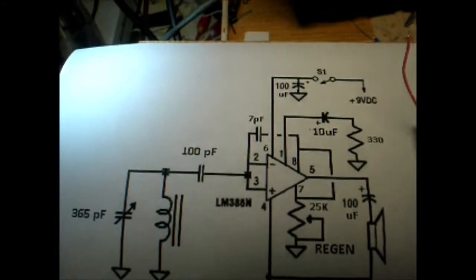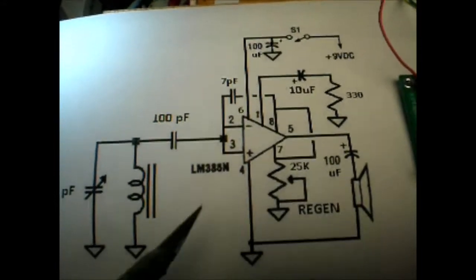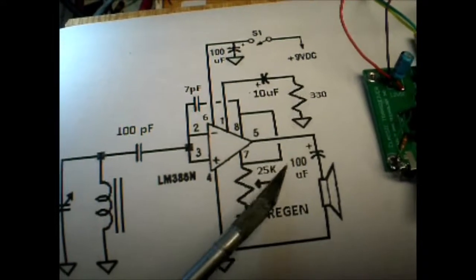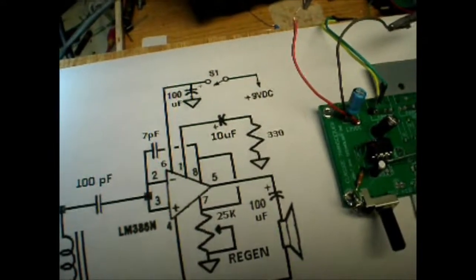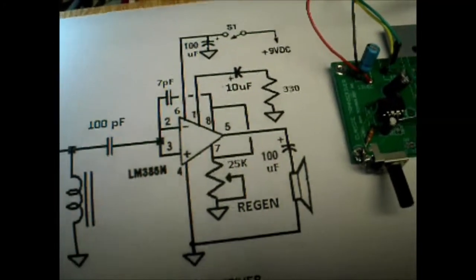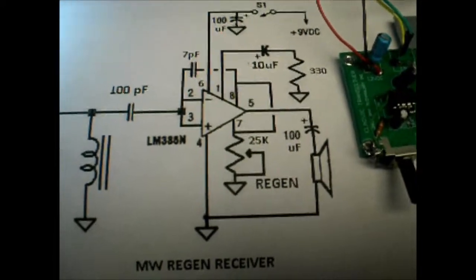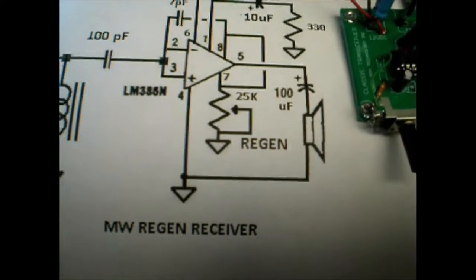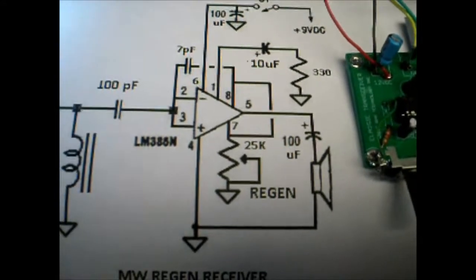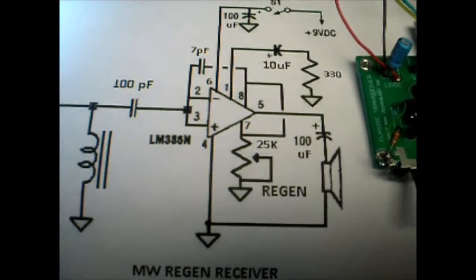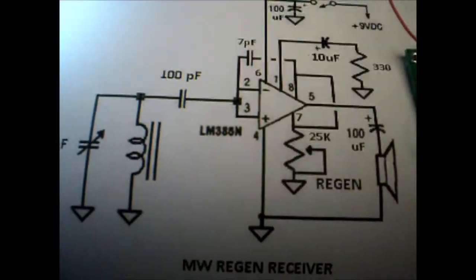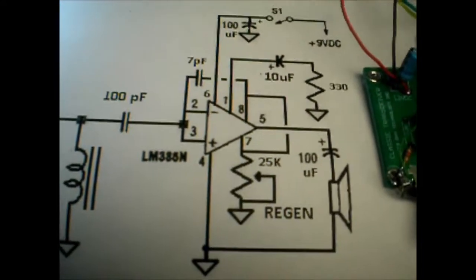There's basically just a few components. The LM386 audio amplifier hooked up a little different than usual, speaker coupled out to the output per the usual way. There's a regen control connected between pins 7 and 8, a little capacitor for some feedback to the input, and then a tuned circuit for the broadcast band. This runs on 9 to 12 volts, but it likes 12 better, so that's what I'm going to use.